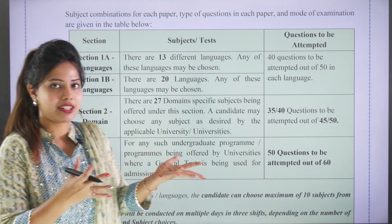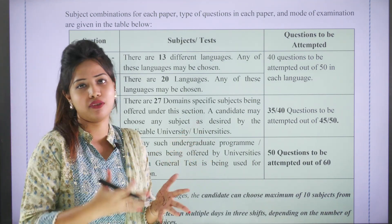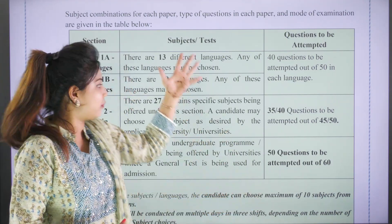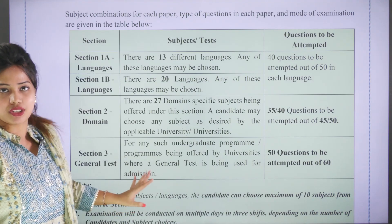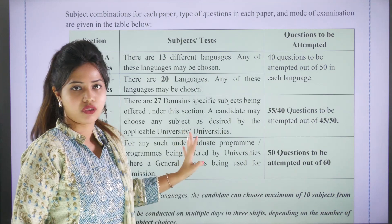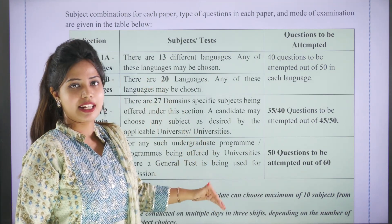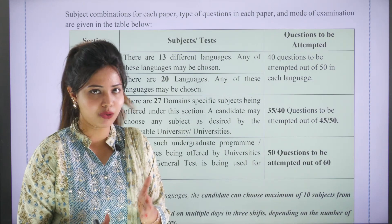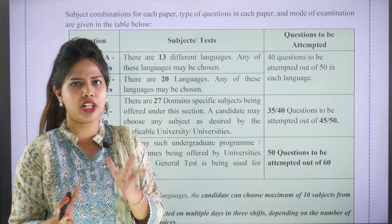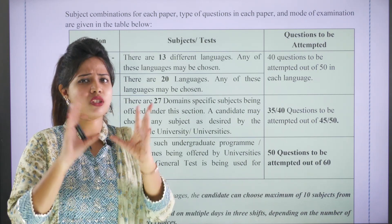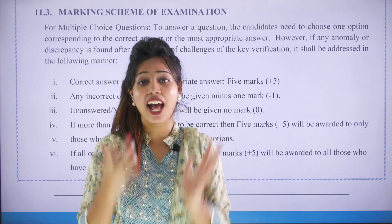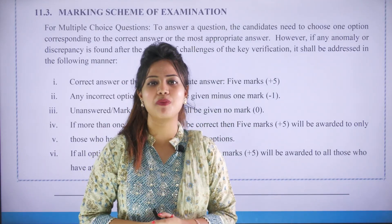For subject allocation, there are a maximum of 10 subjects you can choose across the three sections — either one or two languages, up to four domain subjects, or the General Test. The decision regarding which domain-specific subjects or whether you need to attend the General Test depends on the requirements of your chosen university.